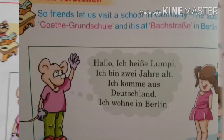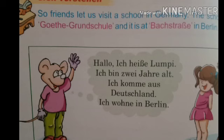So obviously here you will learn how you can introduce yourself in the German language. Let us visit a school in Germany called Goethe Grundschule. Goethe was a famous poet of German literature. 'Grund' means basic, 'Schule' means school, so it is Goethe Basic School. It is located at Bachstraße in Berlin.